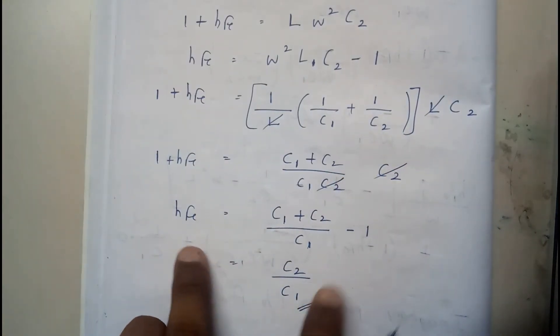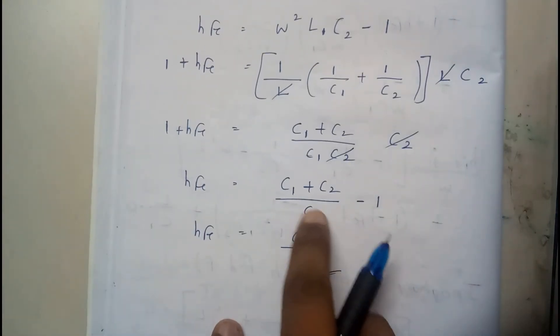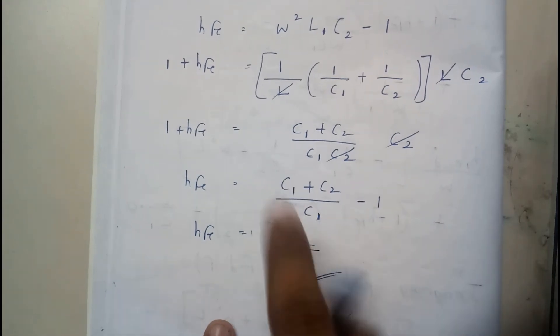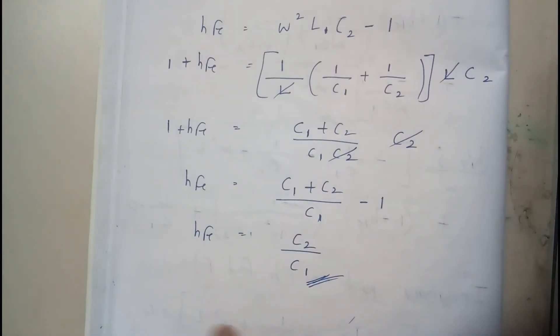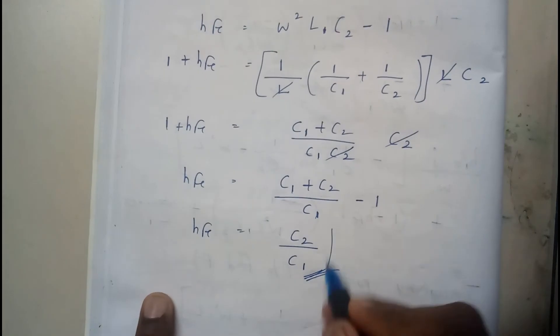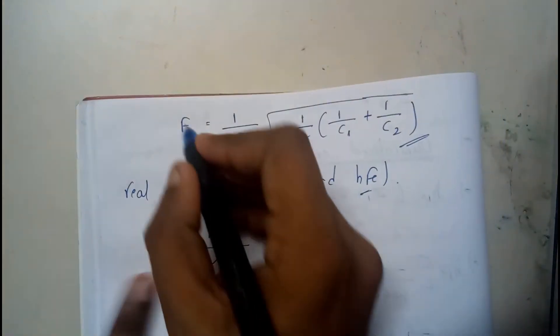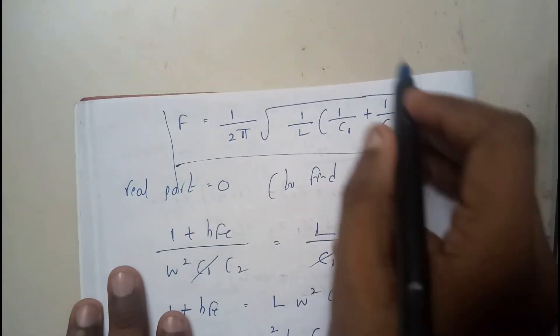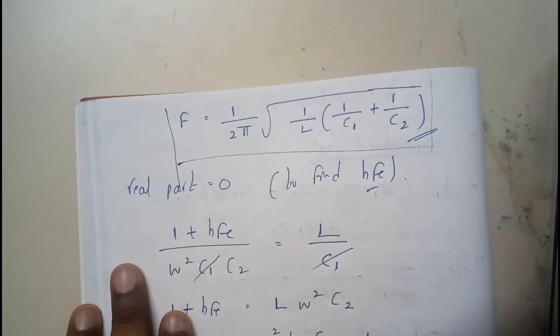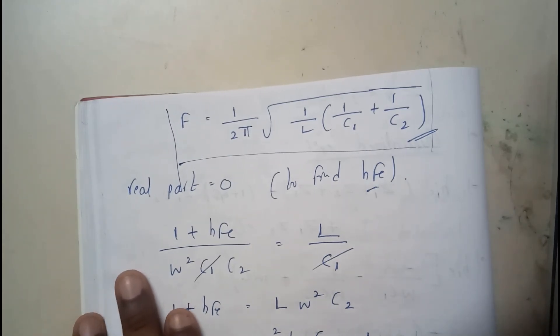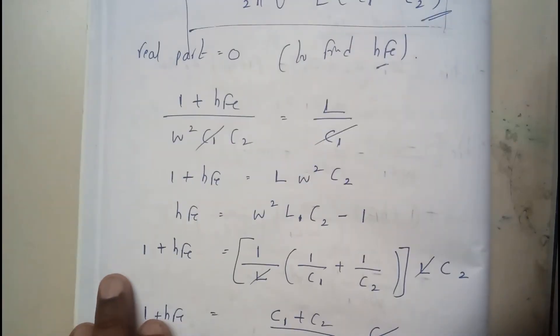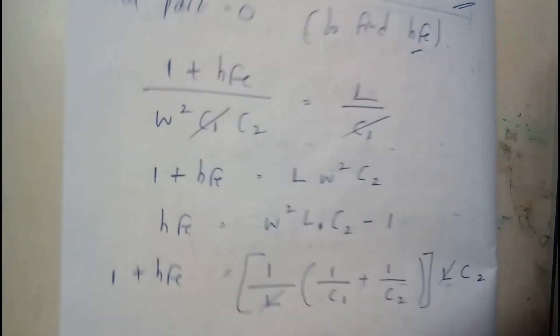So these two got cancelled and we have got minus 1 here. So minus that's C2 by C1. HFE we got that is equals to C2 minus C1. And F we got 1 by 2 pi under root 1 by L into 1 by C1 plus 1 by C2. So now I hope everyone is now clear with Colpitt's oscillator.